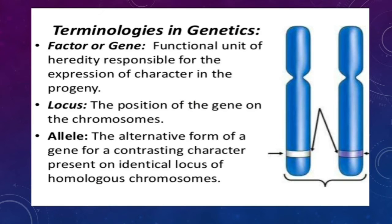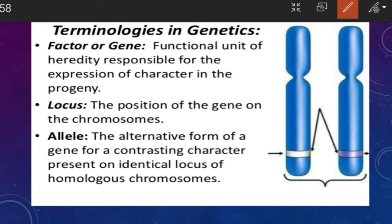Before getting into genetics, we are going to learn some terminologies that we will be using very often. The first term is factor or gene. The word 'factor' was used by Mendel because he was a mathematician and the concept of a gene was not in the picture for him. A factor or gene is the functional unit responsible for expression of a character — it is a functional unit of DNA. The gene is present on a locus: a specific location on a chromosome is known as the locus of a gene.